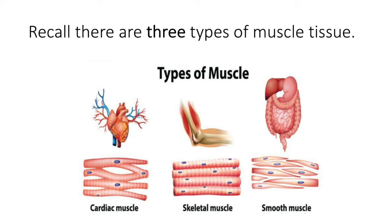The functions of the muscular system are not only to produce movement. In our first module, the introduction to human anatomy, we said the muscular system's function is to produce movement — definitely, that's the primary function. To move the skeleton and produce facial expression if it's skeletal muscle; to move blood through the heart if it's cardiac muscle tissue; or to propel a substance through a passageway if it is smooth muscle tissue.